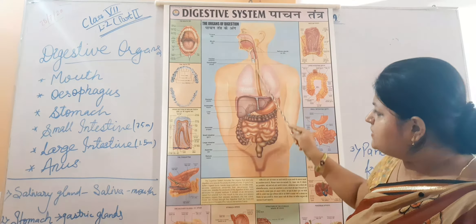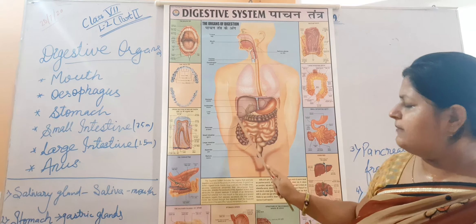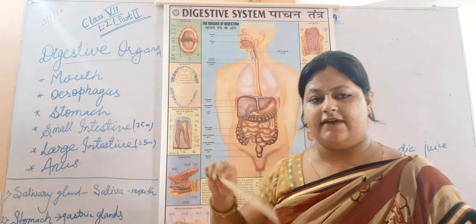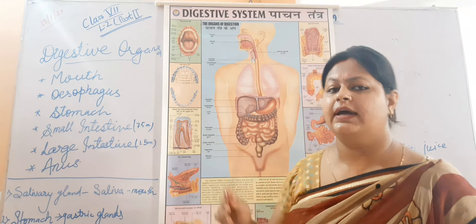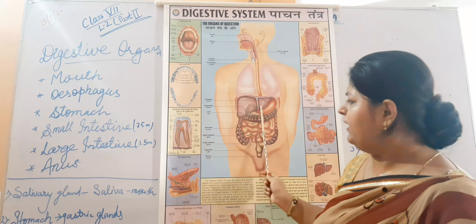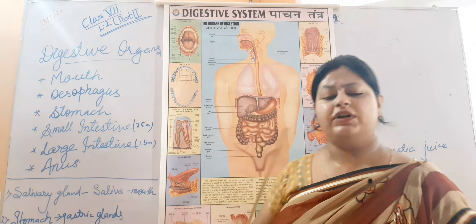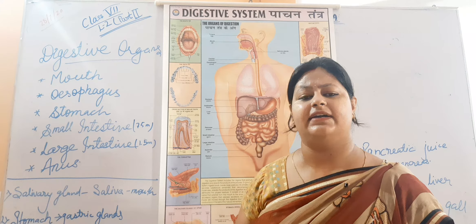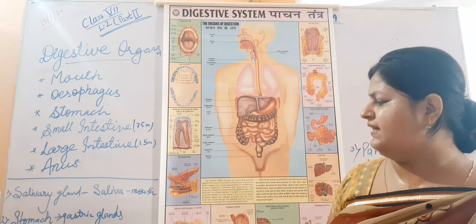The stomach is a J-shaped bag present below the oesophagus, where food arrives after mixing with saliva and breaking down into simple particles. In the stomach, our food gets further digested with the help of gastric glands. The gastric glands present in the stomach secrete mucus, hydrochloric acid, and gastric juice.